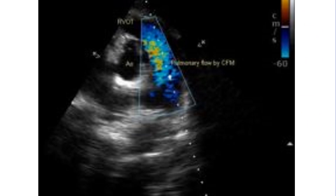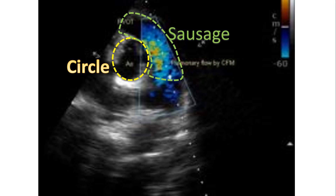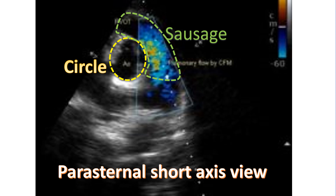In normally related great arteries, the aortic valve is to the right and posterior to the pulmonary valve. The echocardiographic description of the relation between the aorta and pulmonary artery is a circle and sausage appearance, with the right ventricular outflow tract and pulmonary artery encircling the aortic cross-section, seen in the parasternal short axis view. In dextro-transposition of great arteries, the great vessels are almost parallel and the arrangement is called the two-circles appearance.